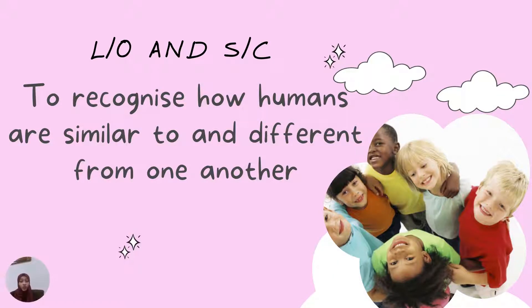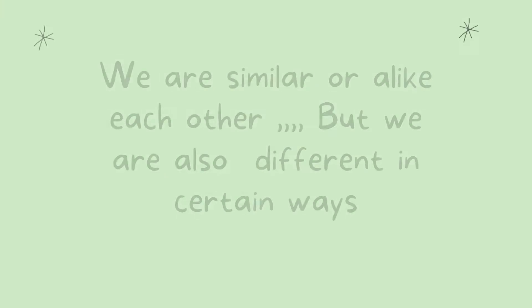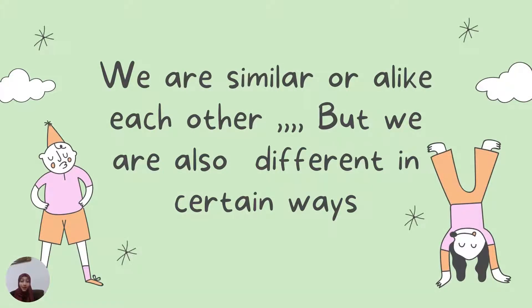So what is our learning objective and success criteria? You should be able, at the end of this class, to recognize how humans are similar to and also different from one another. We are similar or alike each other, but we are also different in certain ways. Allah created us similar, but also we are different.